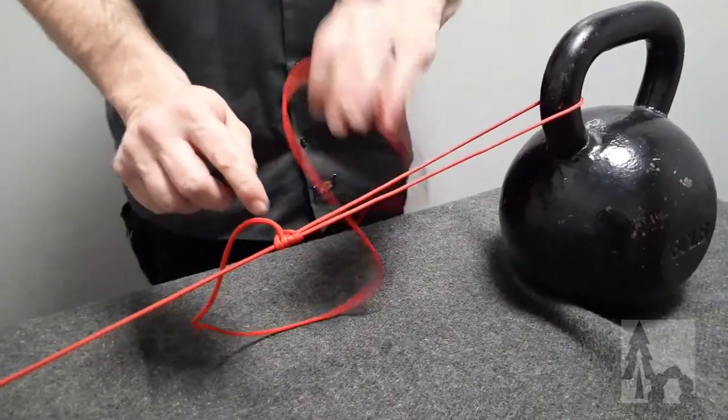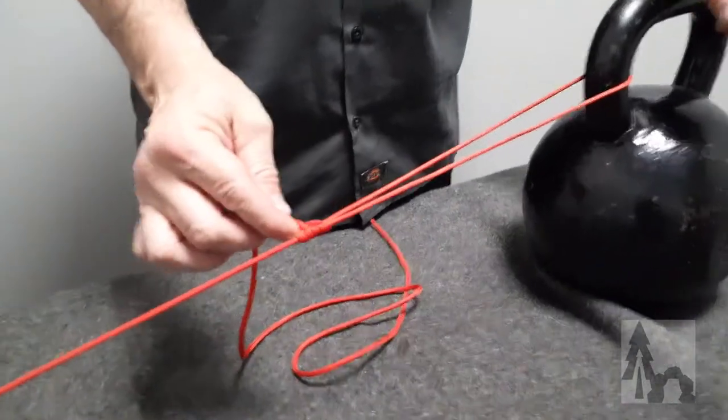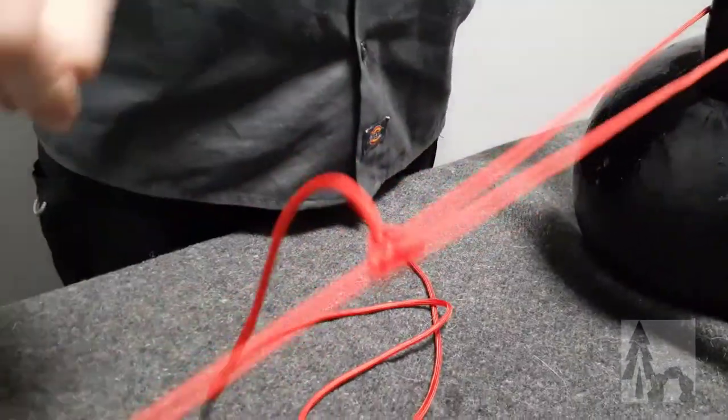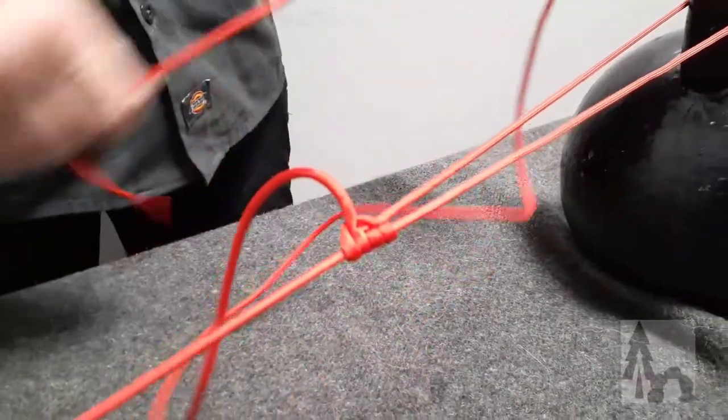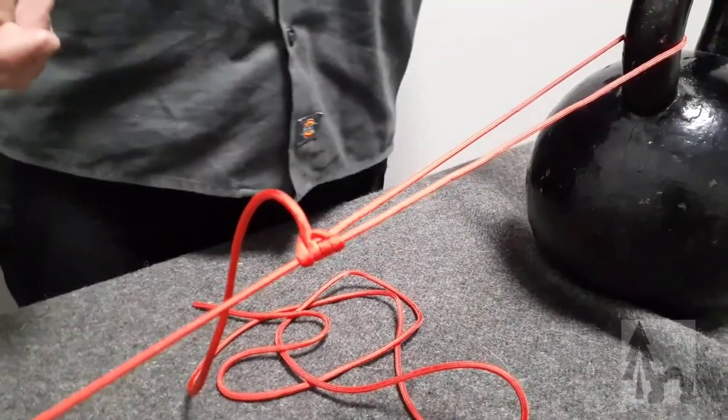It'll pull that line taut because it kind of kinks the line there. That little barrel bites down on itself. And this taut line hitch, you see this most often. We use this with stakes or guy outlines.